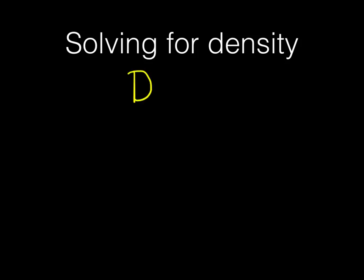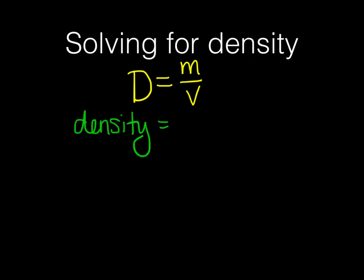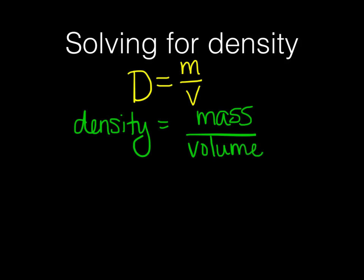So how do we solve for density? Density has a formula: D equals M over V. The D stands for density, the M stands for mass, and the V stands for volume. The mass is always calculated in grams, and the volume is calculated in liters or milliliters. This is how you find density.